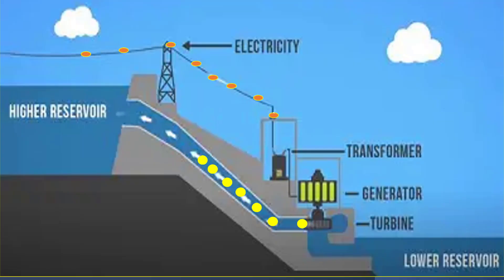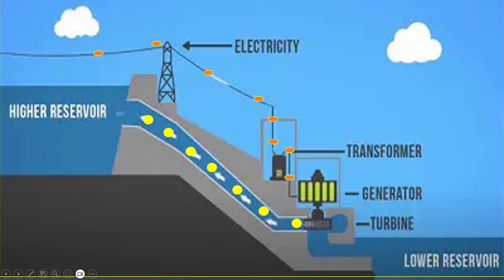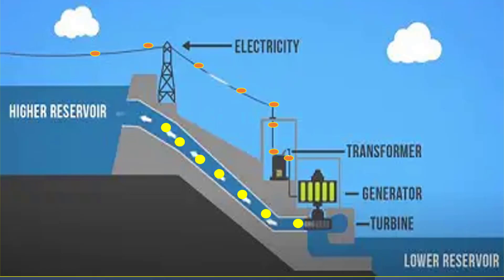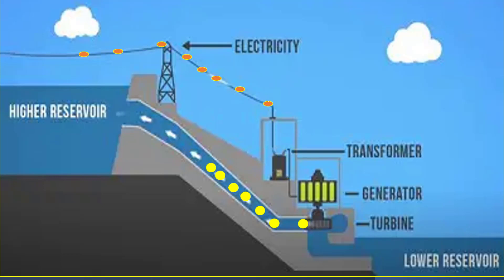Let's look at a basic diagram of a hydroelectric power station. Water is stored at a higher reservoir and has potential energy, which is transferred to lower levels. This potential energy of water is converted to kinetic energy. This kinetic energy is used to rotate the turbine, converting kinetic energy to mechanical energy. The turbine is attached to a generator.